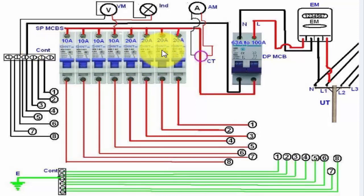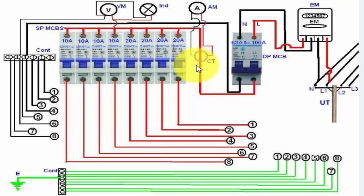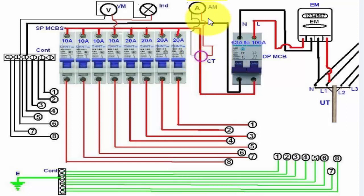Before the connections of the MCB circuit breakers, the phase wire goes through the CT current transformer. The two wires of the current transformer are connected to the ammeter, which will show the total load of our complete distribution board — the total running loads.